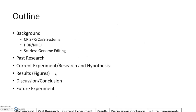Before I start, here's a general outline of what I'm going to be talking about. First I'll go into some background — for example, CRISPR-Cas9 systems, homology-directed repair, and non-homologous end joining. Then I'll go into scarless genome editing, past research on increasing editing efficiencies, the current experiment including research questions and hypothesis, each of the figures, discussion and conclusion, and finally my proposed future experiment.